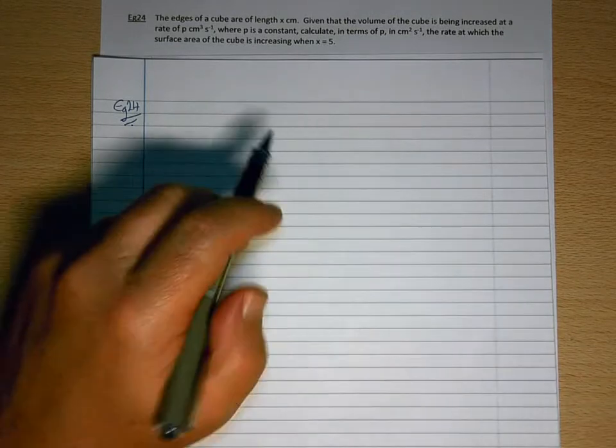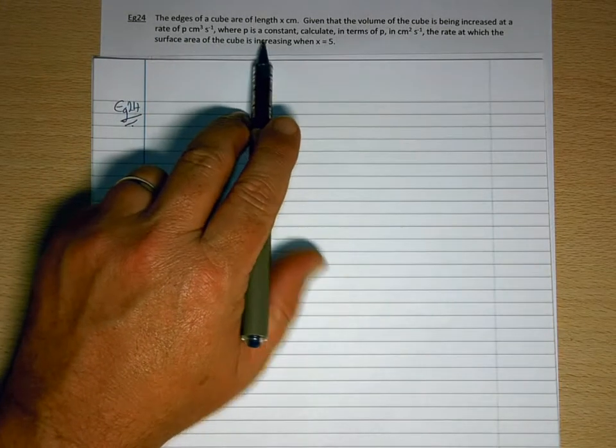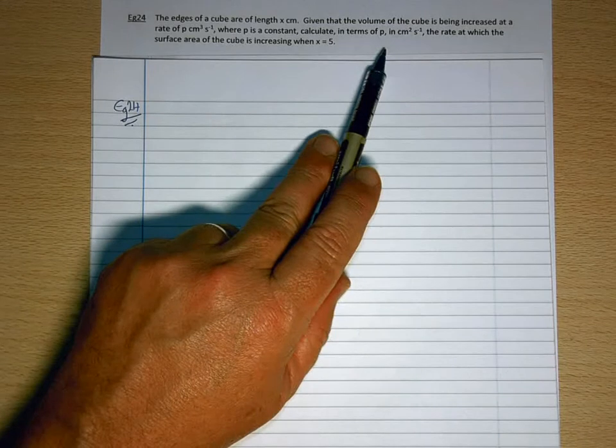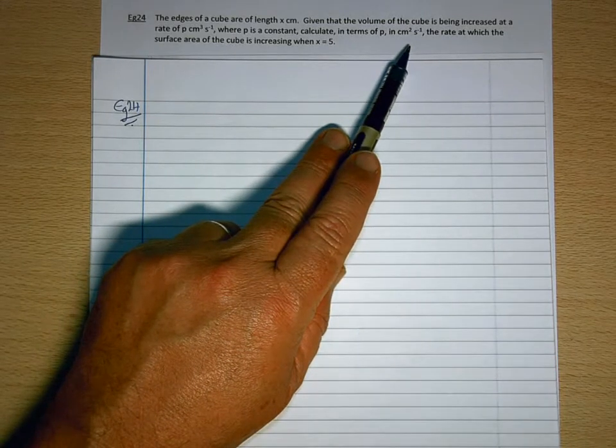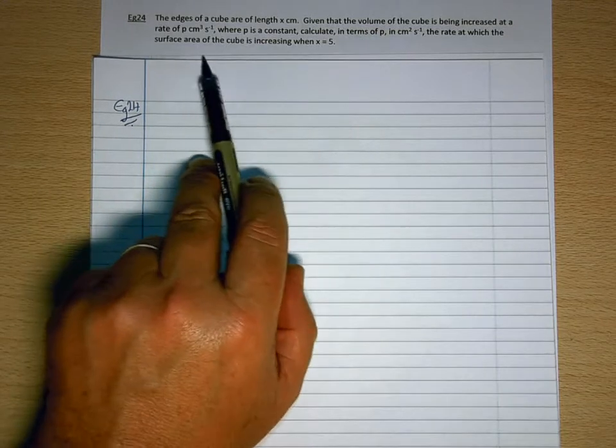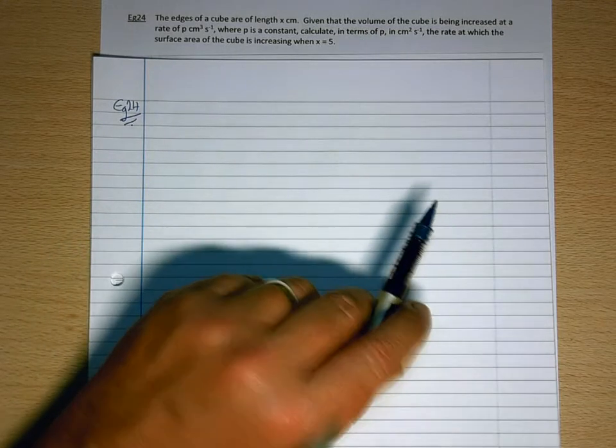So the edges of a cube are of length x centimeters. Given that the volume of the cube is being increased at a rate of p centimeter cubed per second, where p is a constant, calculate in terms of p, in centimeters squared per second, the rate at which the surface area of the cube is increasing when x is 5.